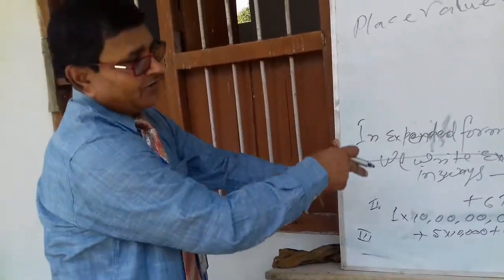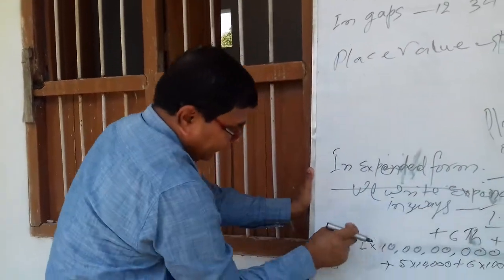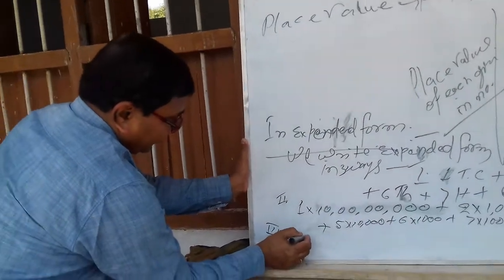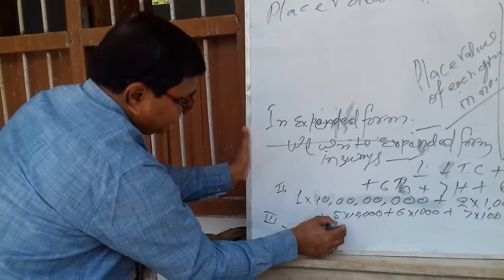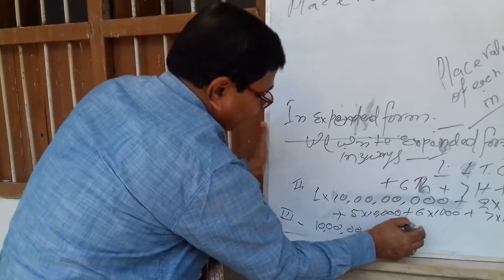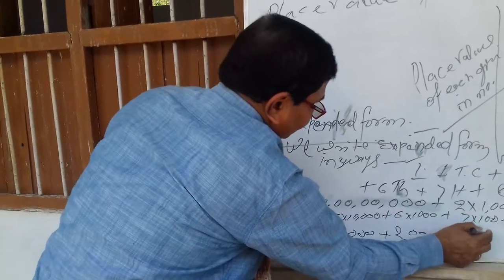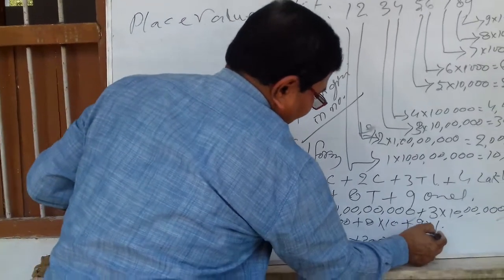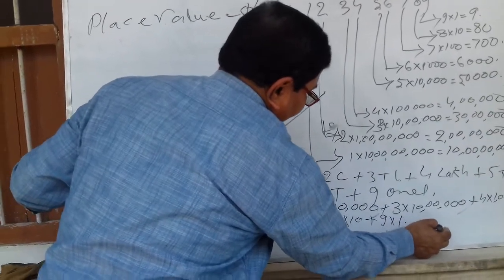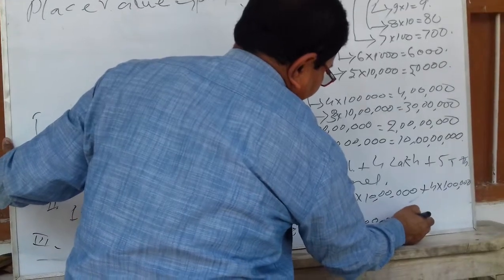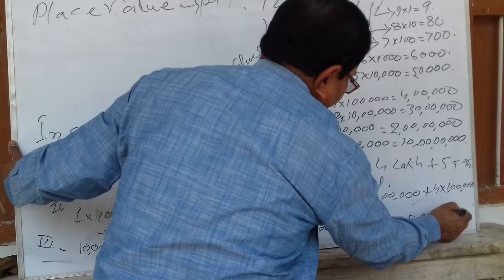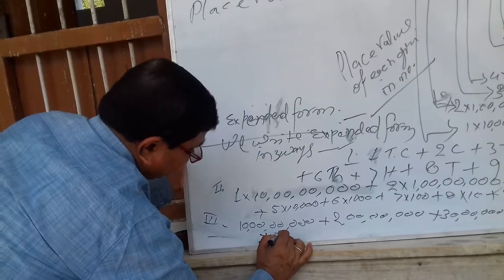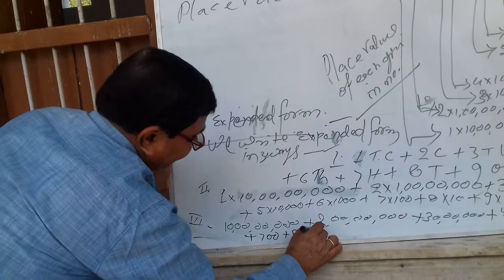Third way: direct values. Ten crore plus two crore plus thirty lakh plus four lakhs plus fifty thousand plus six thousand plus seven hundred plus eighty plus nine.